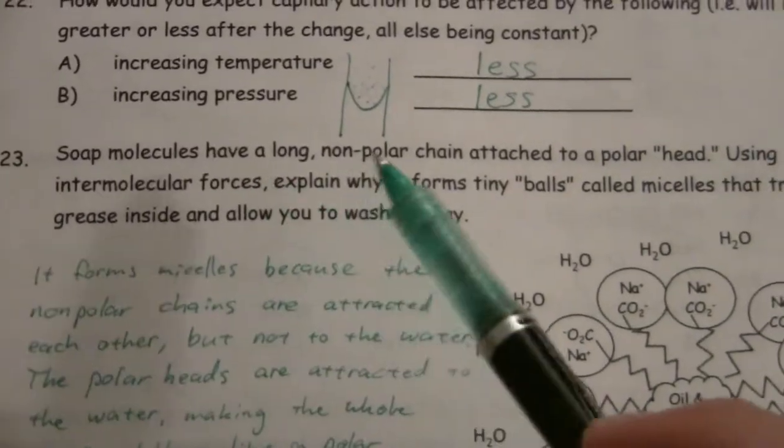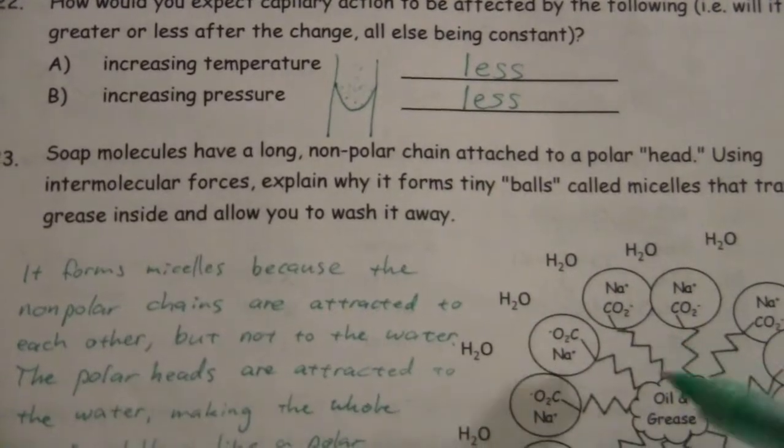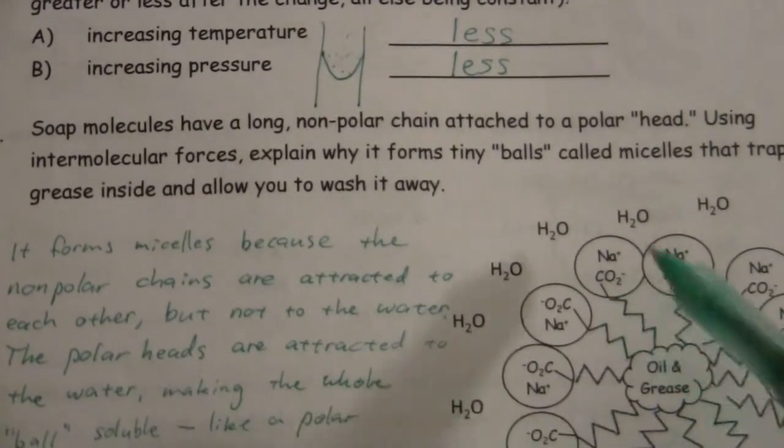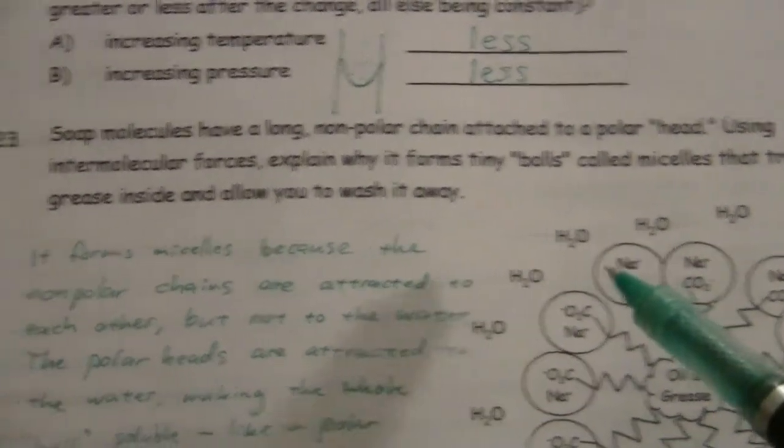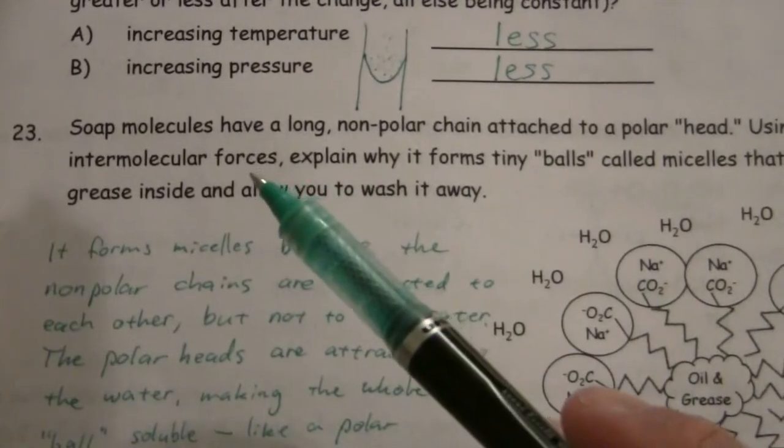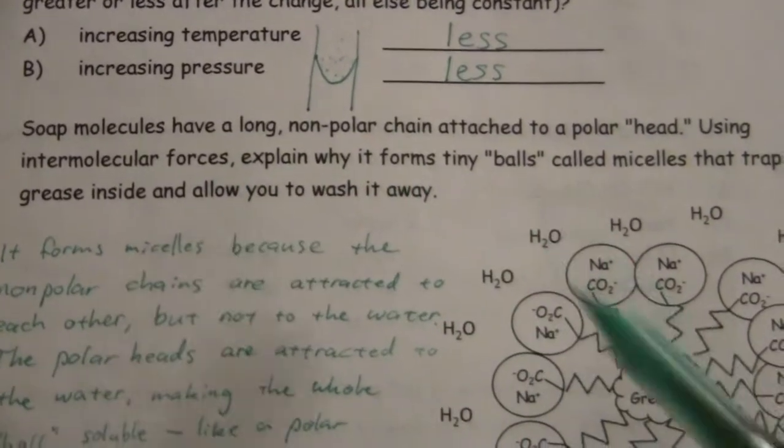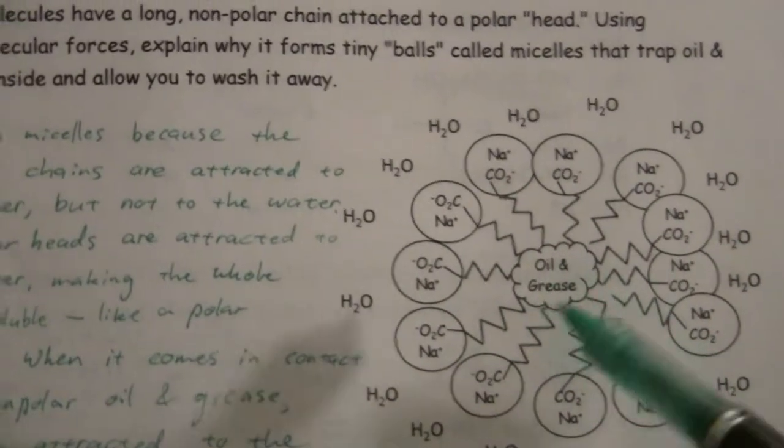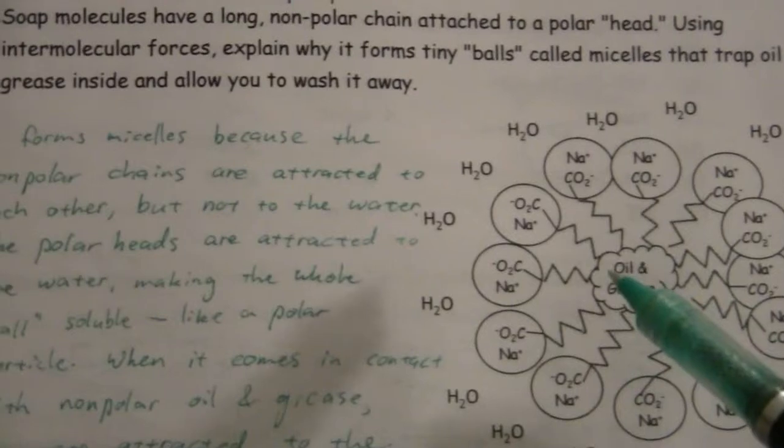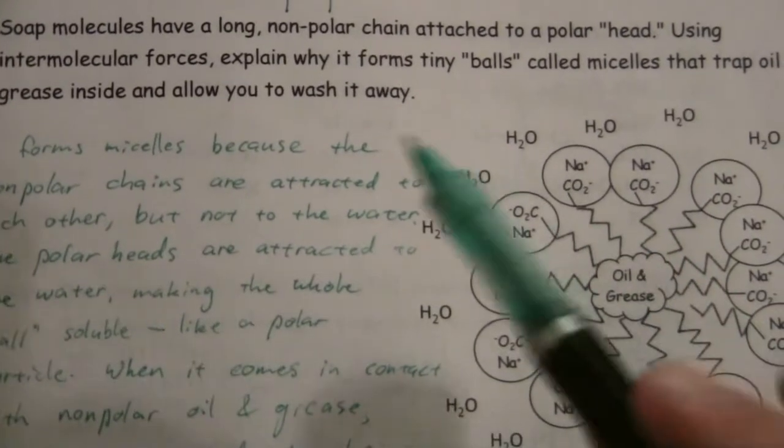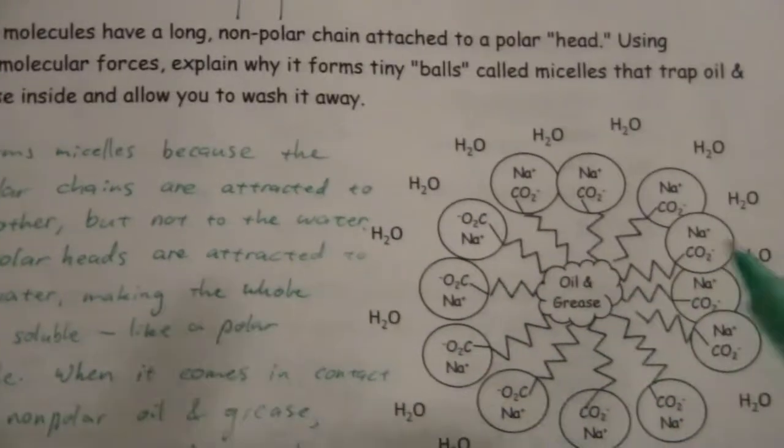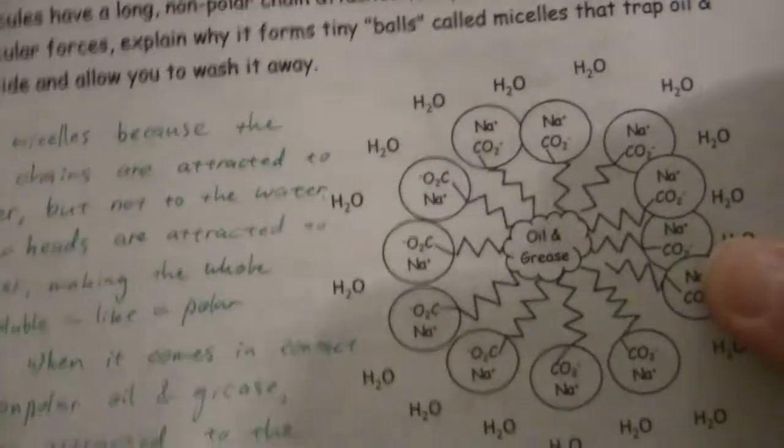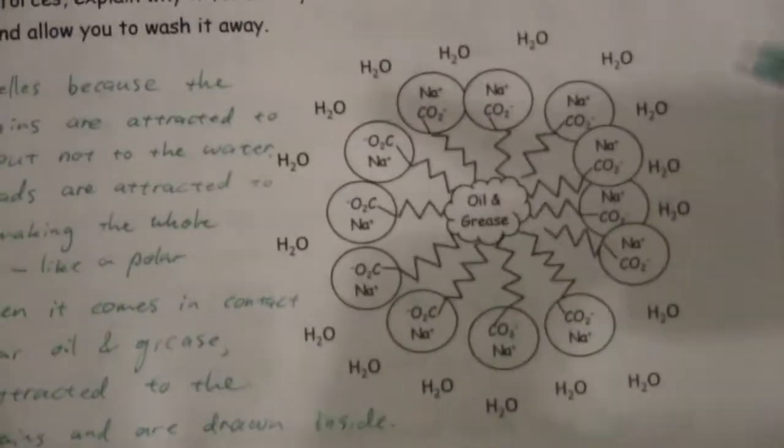Soap molecules have a long nonpolar chain attached to a polar head. Using intermolecular forces, explain why it forms tiny balls called micelles that trap oil and grease inside and allow you to wash it away. So that's the process that happens when we wash our hands.